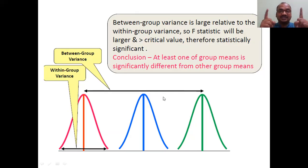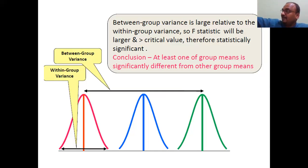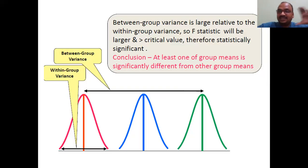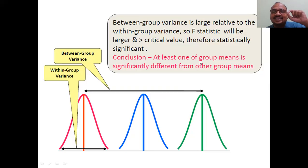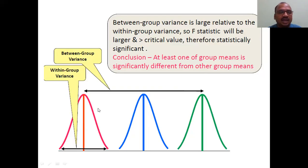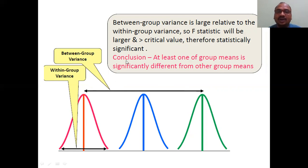A significant difference exists — that is why all curves differ from each other. One group is on one side, one is at the center, maintaining distance. At least one group mean is significantly different from another. These two groups may be somewhat equal, but this third group is very widely different. So at least one group shows a minimum difference.